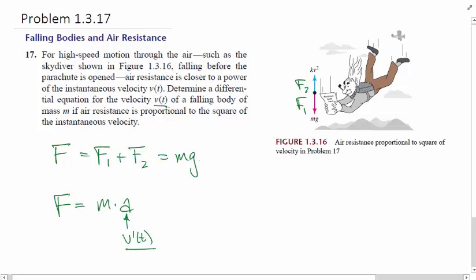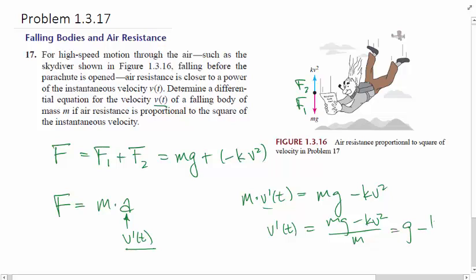F1 is equal to Mg, and F2 is equal to, well, this looks like it's the opposite direction of Mg. So let's call it a negative Kv squared. So if we just set these two forces equal to each other, we have M times the derivative of the velocity is equal to Mg minus Kv squared. And so you can write it, leave it like that, or you can solve for V prime. So the derivative of the velocity is equal to Mg minus Kv squared over M, or you can distribute the M and just say G minus Kv squared over M. So this is your differential equation with the function V.